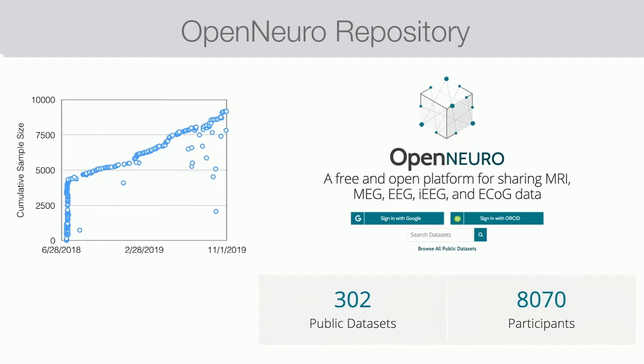BIDS has allowed for an expansion of data sharing in our field unlike anything I've seen in my academic lifetime. If you track OpenNeuro — our field's standard data repository where you can put up a neuroimaging experiment — even in the last year and a half we've had over a doubling in submissions. OpenNeuro only works if you submit your data in BIDS format, so this shows how fast the field is adopting this industry standard data architecture.